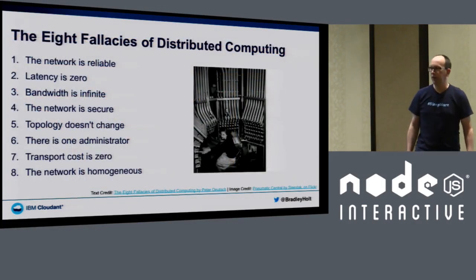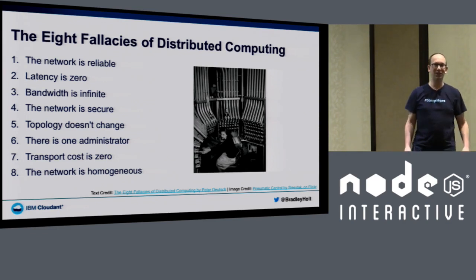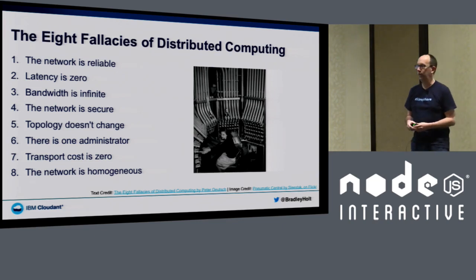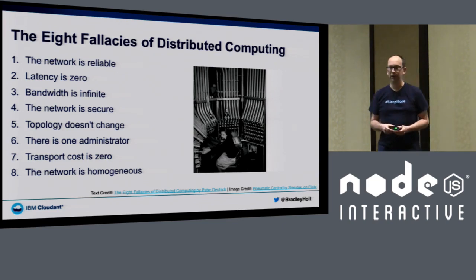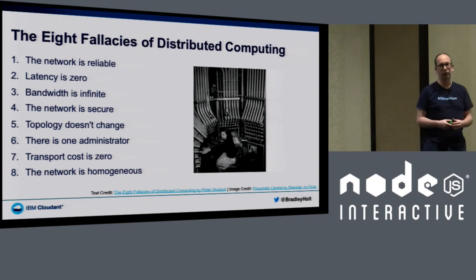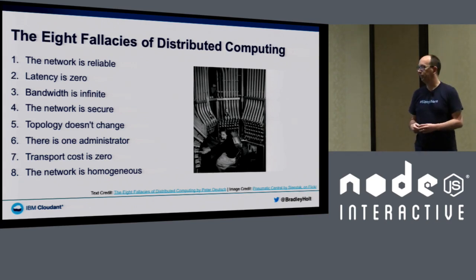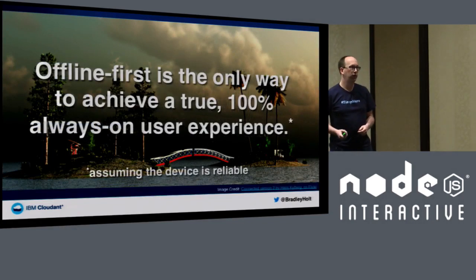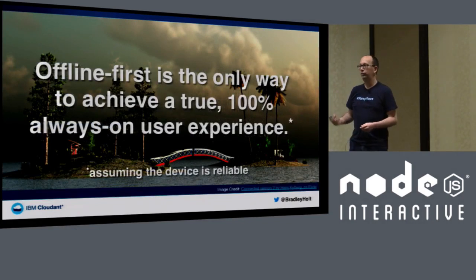Who's heard of the fallacies of distributed computing? This is a set of assumptions that developers often make about the network — that the network will be reliable, that you'll have zero latency, that you'll have infinite bandwidth. In reality, this isn't how networks work. If you want to achieve a true 100% always-on user experience, offline first is the only way to go.